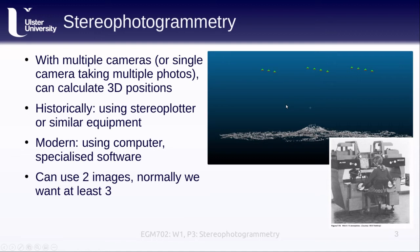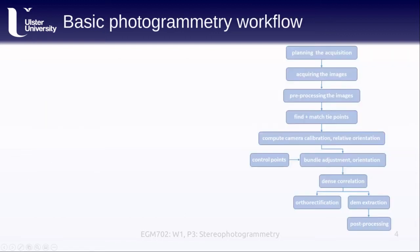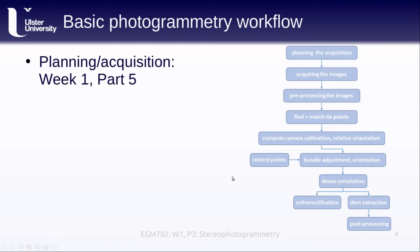Normally we want at least three images — we like a bit of redundancy in our calculations. The basic workflow looks like this: we have planning and acquisition, then any necessary pre-processing, followed by finding and matching tie points, computing camera calibration, performing a bundle adjustment, inserting control points, doing dense correlation, and pulling out a DEM with possible orthorectification.